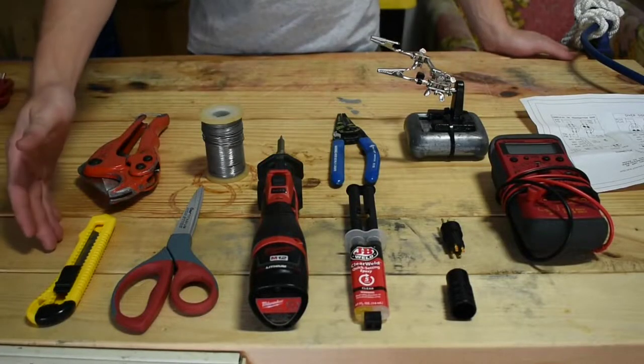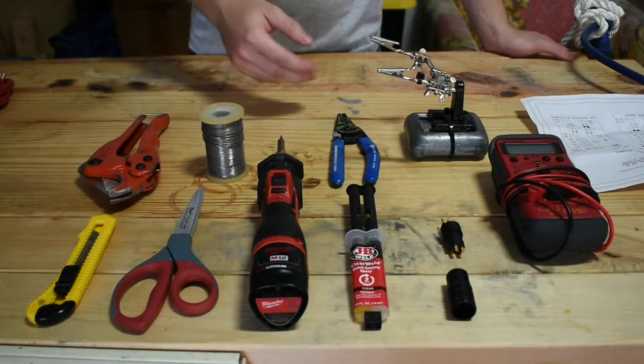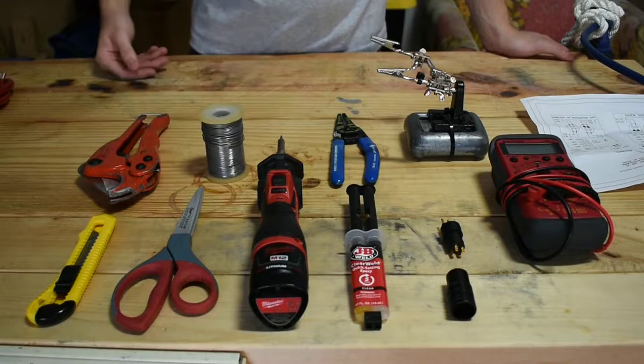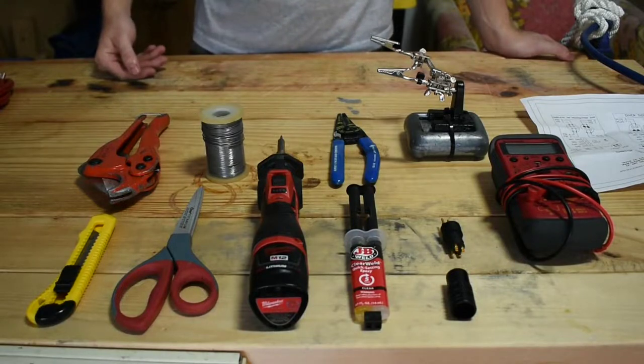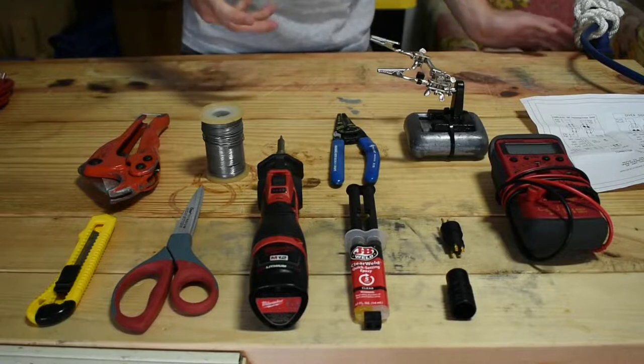So what you'll need for this is a sharp knife, sharp scissors, a soldering iron, some JV Weld five-minute epoxy. You want the epoxy that's liquid, you don't want any sort of paste or putty.